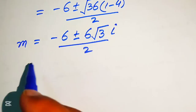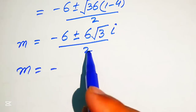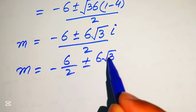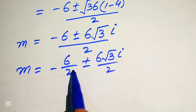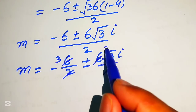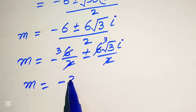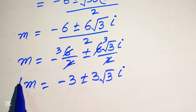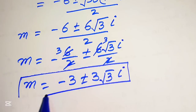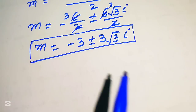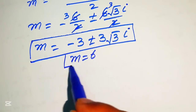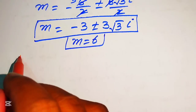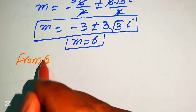Breaking the fraction, m equals minus 6 over 2 plus or minus 6 times square root of 3 times i, divided by 2. This gives m equals minus 3 plus or minus 3 times square root of 3 times i. These are the two complex roots from equation number 1. So from equation 1 we have three roots in total, and now we move to equation number 2.